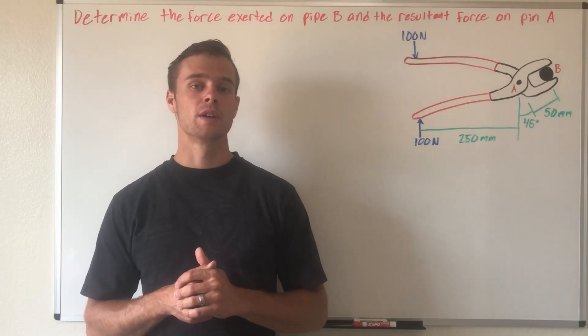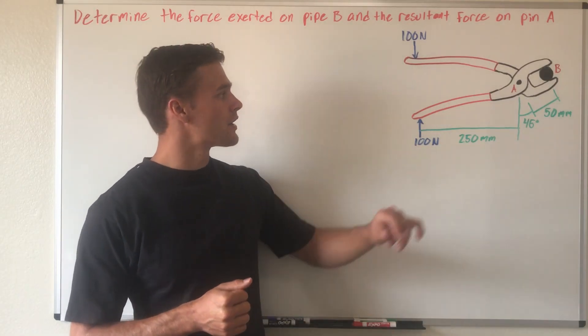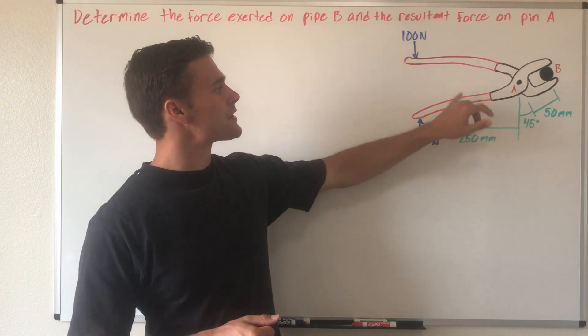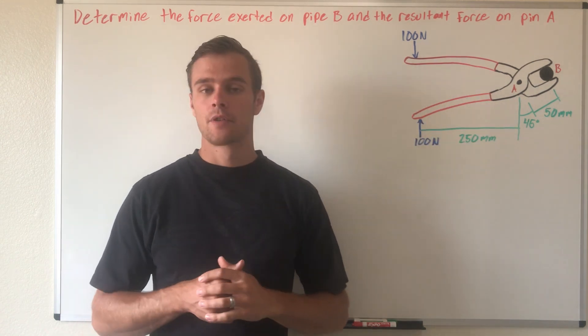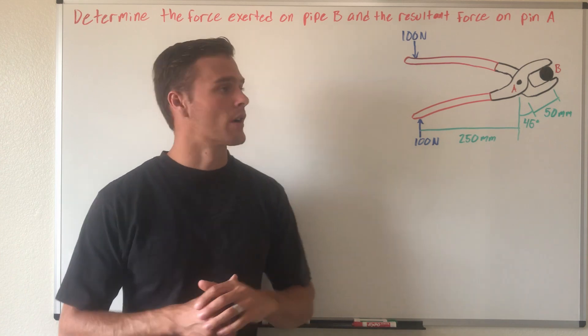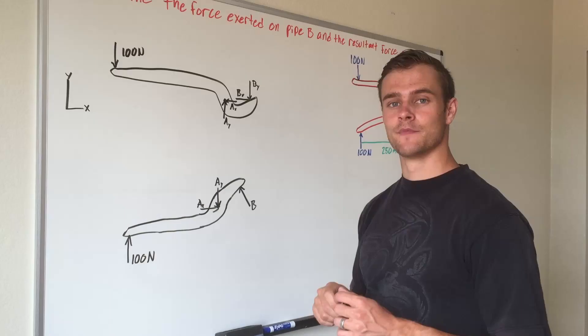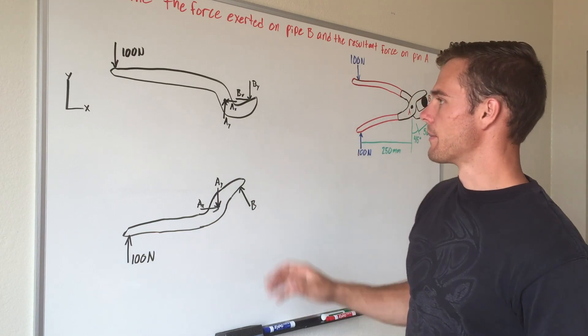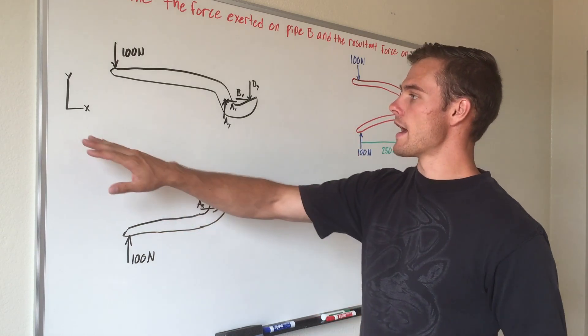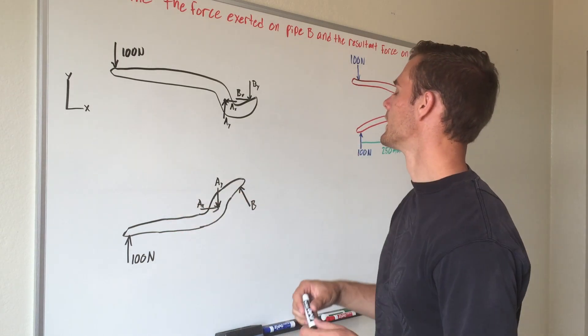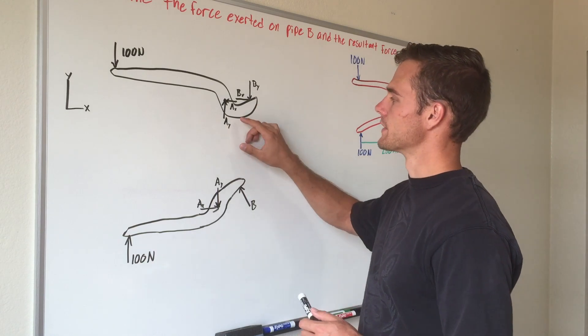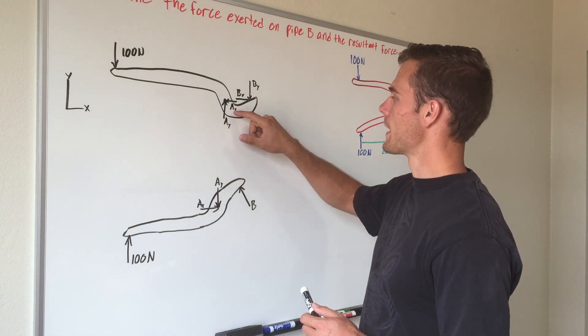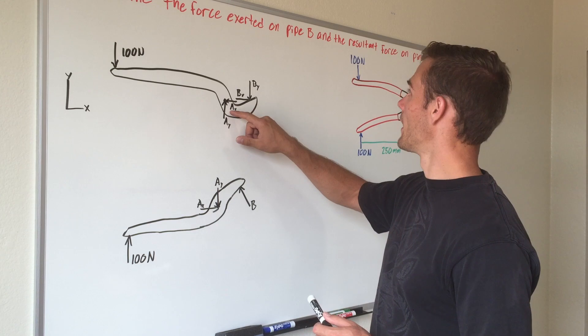So the first thing we need to do is we need to draw each of these members of the pliers in free body diagrams. So here we have our free body diagrams of each of these members. And we have our x and y directions labeled, and we have split up our forces at point A, which are the reaction forces on the pin A, into their x and y components.